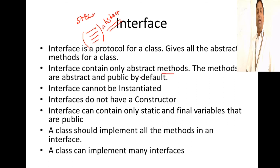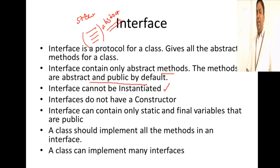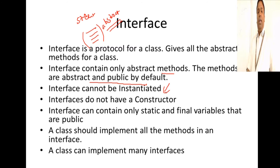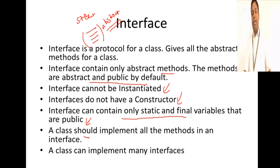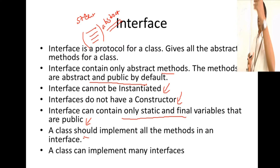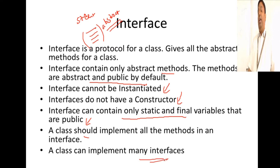An interface can contain only abstract methods. The methods are abstract and public by default, so interface methods cannot have any other visibility. Interfaces cannot be instantiated because all the methods are abstract. Interfaces do not have a constructor. An interface can contain only static and final variables that are public. When a class implements an interface, it should provide the definition for all the methods that are abstract in the interface. A class can implement many interfaces.